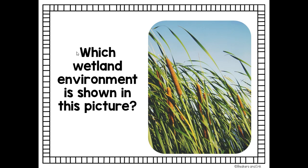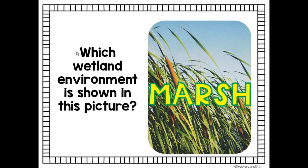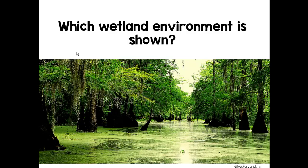Which wetland environment is shown in this picture? By looking at this, you can see a tall grass-like plant — this is a cattail, and that signifies that this is a marsh. Take a look at this next picture. It looks like a flooded forest with lots of cypress trees — and this is a swamp.